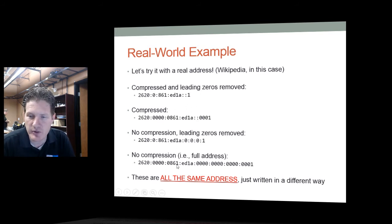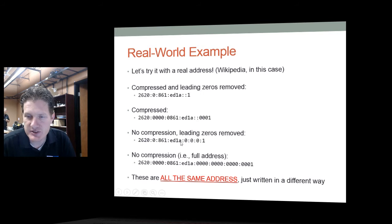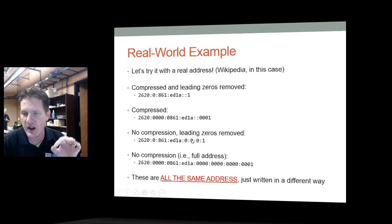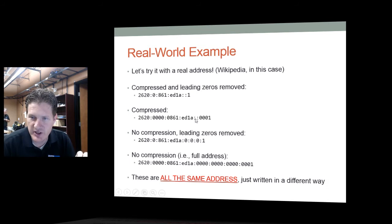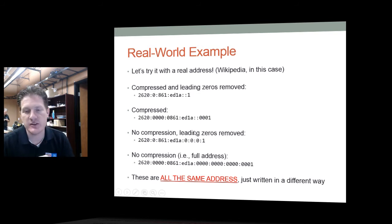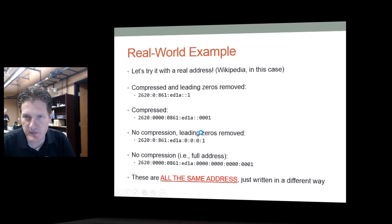The full address is shown at the bottom. Next is the one with leading zeros removed but no compression — notice '0001' is not compressed, the leading zeros are just removed. Then the compressed version uses double colons to remove three blocks of zeros. These are all the same address, just written in different ways.